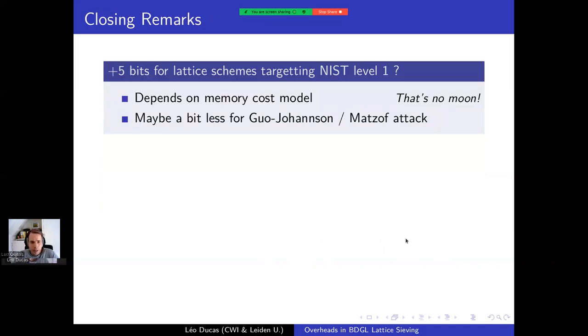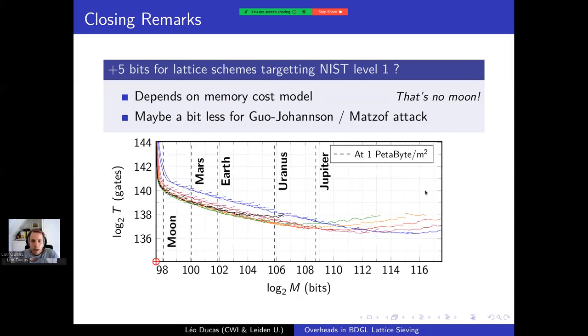Some closing remarks. So does this all mean that we can conclude five more bits of security for NIST level one schemes based on lattices? No, for two reasons. First it depends on your memory cost model. And some people consider that memory does not cost anything, or at least the RAM model considers this. I don't know if anyone really believes this model is realistic, but it is used. And in that case, well, you can go down to a huge amount of memory and only increase the time cost by a factor two or two and a half. Well, if you look at the memory requirement, this is pretty big. At one petabyte per square meter, you're basically filling Jupiter or maybe Earth if you're more reasonable. But nevertheless, this is the RAM estimate.